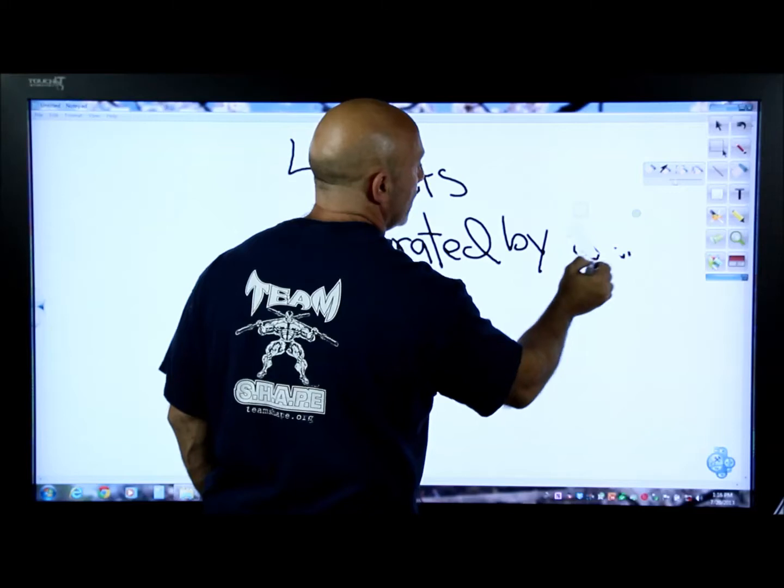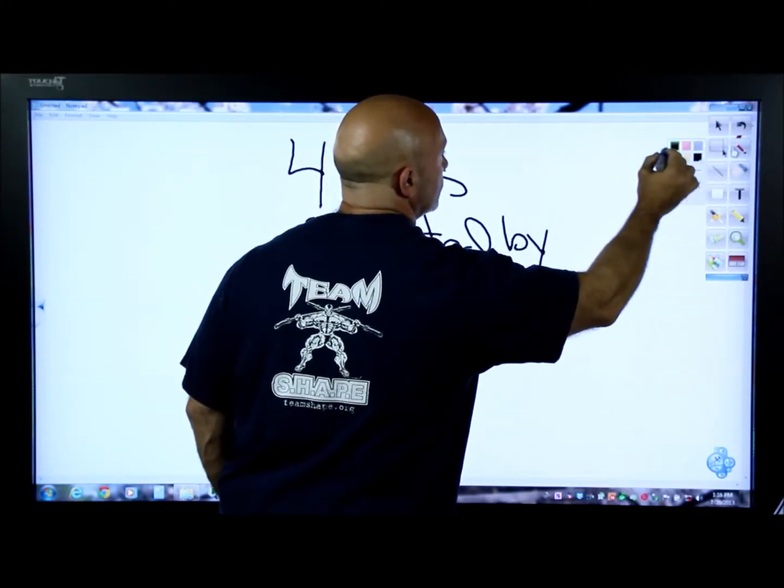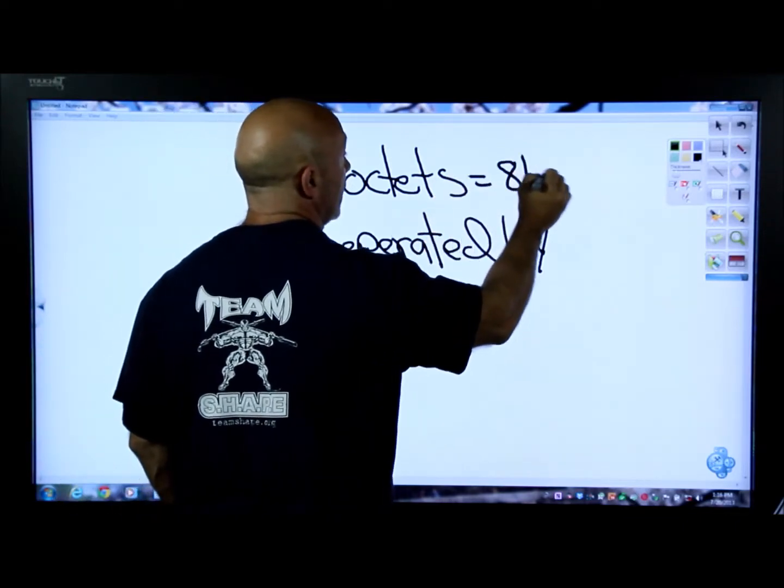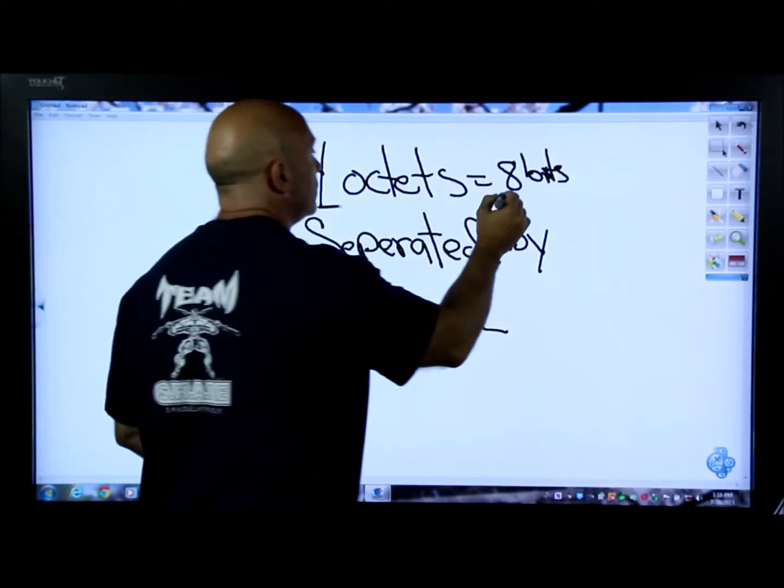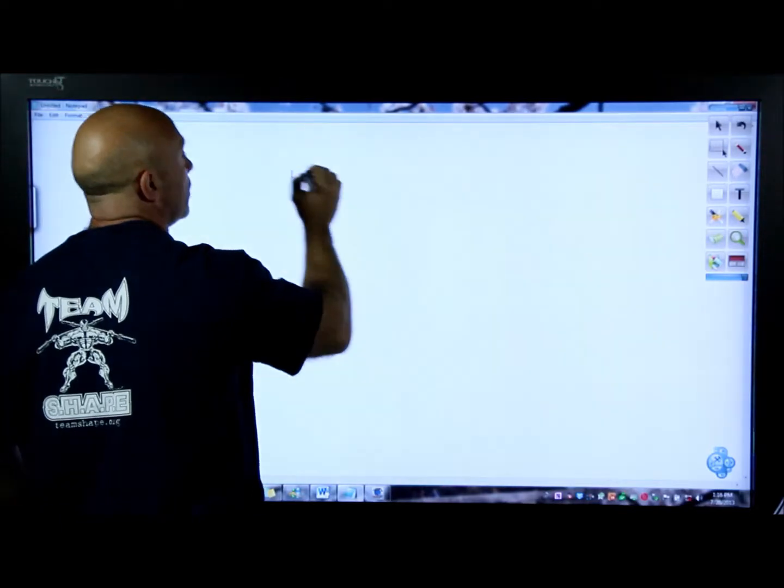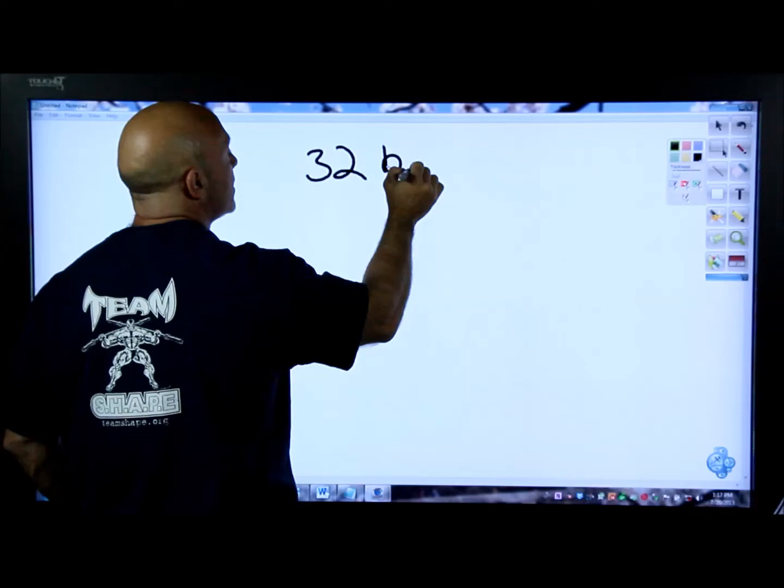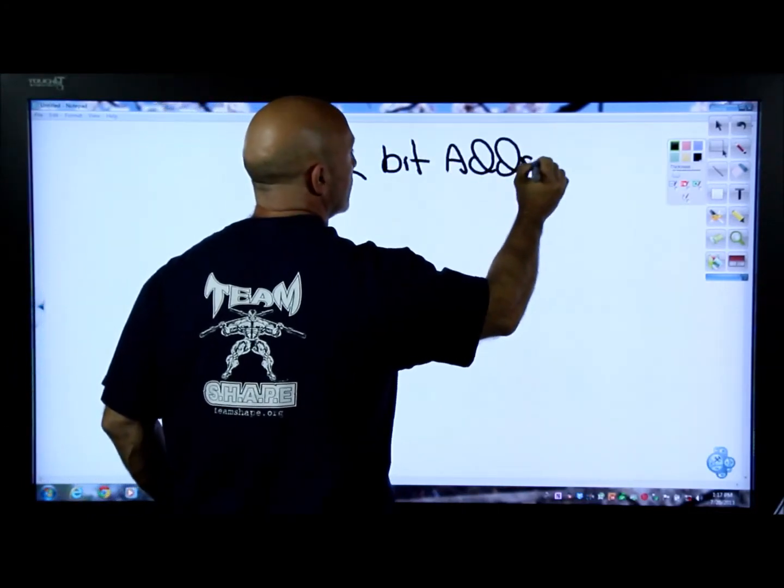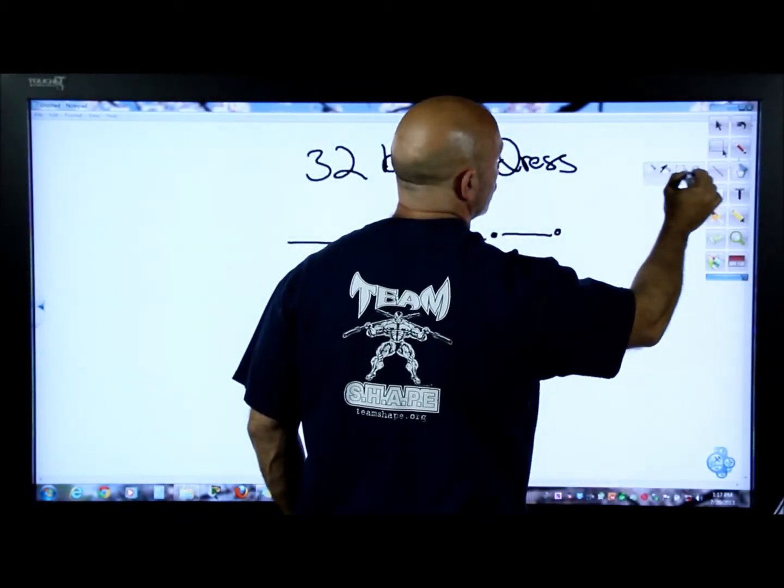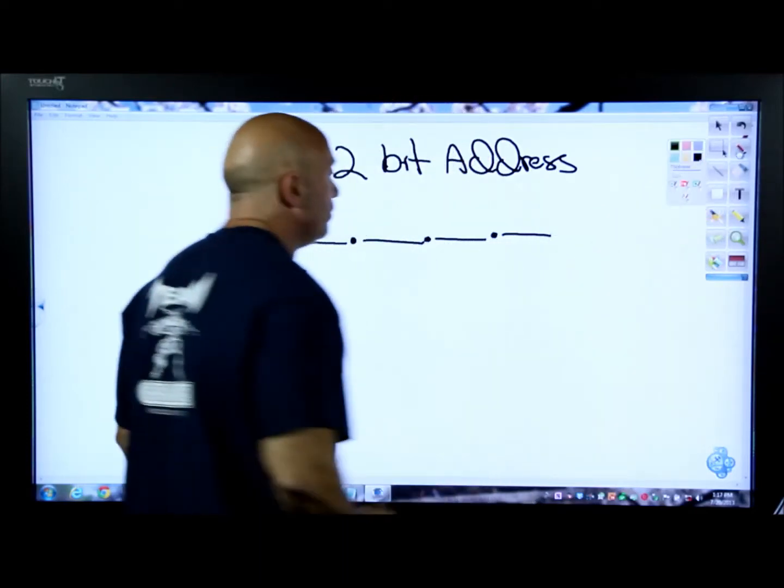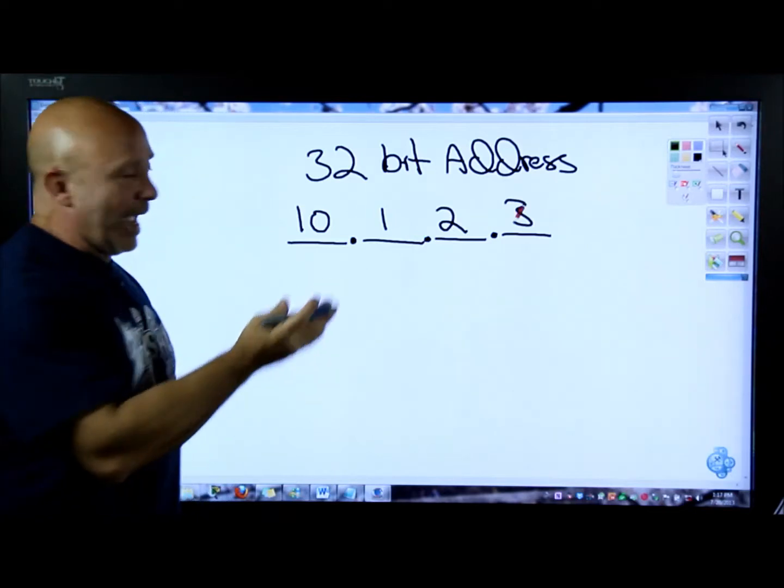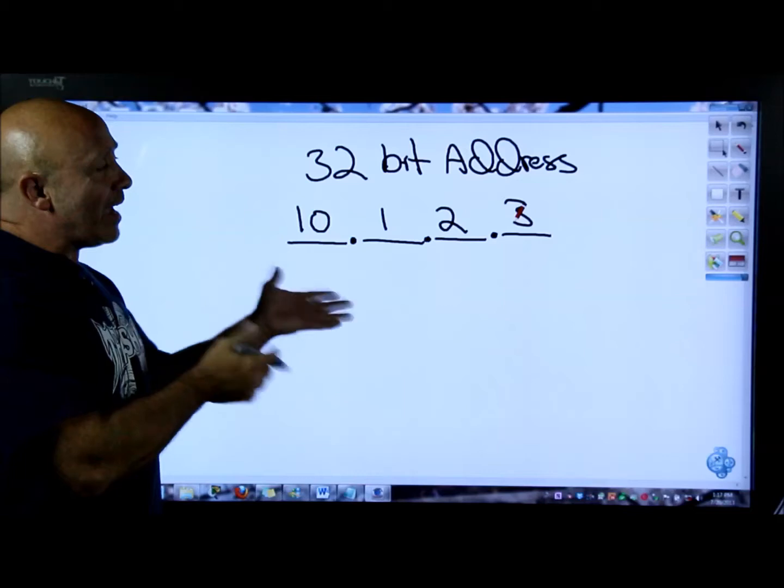So we got four octets, meaning eight bits in each octet. So you got eight times four, we have a 32-bit address. So an IPv4 address is a 32-bit address. And we see it just like this. That's your IPv4 address, and of course whatever numbers you're using - 10.1.2.3, whatever IP address you have on there.